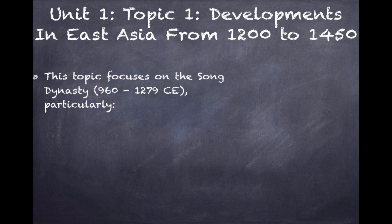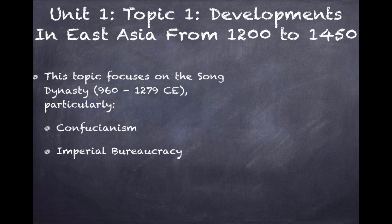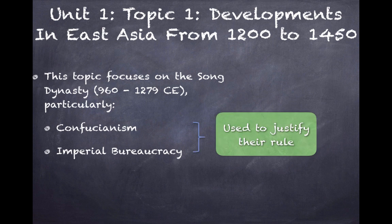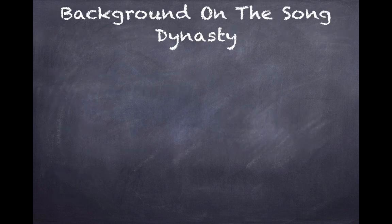In particular, we're going to focus on the following aspects of the Song Dynasty. Number 1: Confucianism. Number 2: Imperial Bureaucracy. And these two together will be used to justify their rule — the Song Dynasty will use this to justify their rule in China. We'll also cover Buddhism and labor.